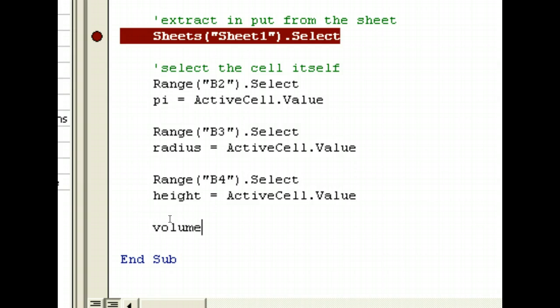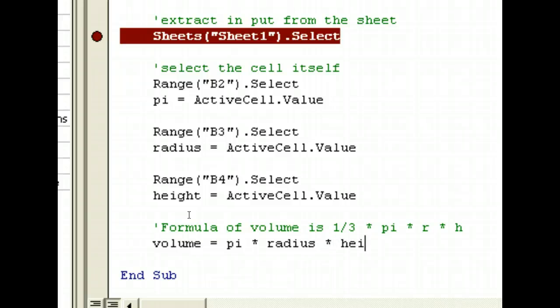Now, we need to calculate the volume. So, we're using the formula. Volume equals to. We know that the formula is the formula of volume is 1/3 times pi times radius times h. So, what we do is volume equals to pi times our radius times our height times 1 divided by 3. In fact, we can just do like this. We can bracket the whole thing and then we can divide by 3.